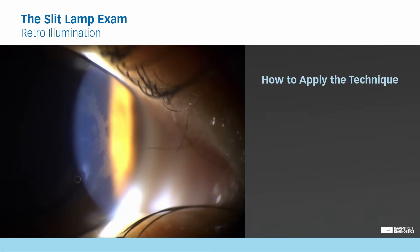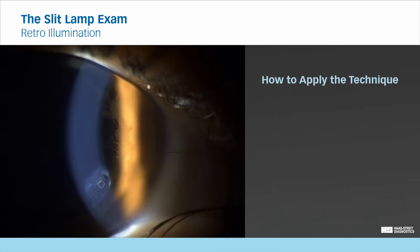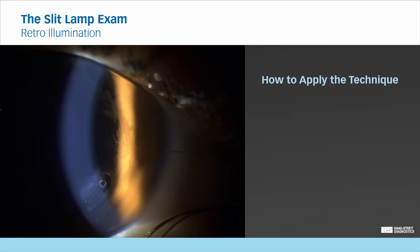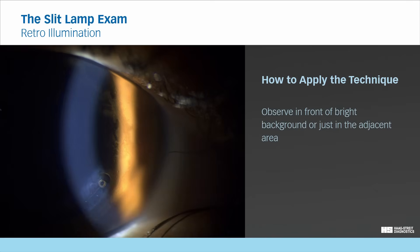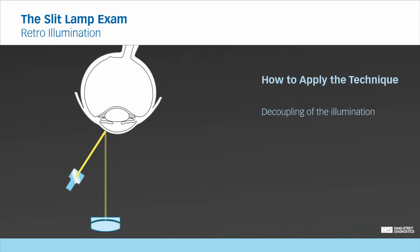To use retroillumination, focus on the area of interest and illuminate the structure behind it. With direct retroillumination, you observe directly in front of the illuminated background. With indirect retroillumination, you look just adjacent to the reflecting area. Depending on the properties of the irregularity, visibility may be enhanced by using either direct or indirect retroillumination. Due to the common pivot of illumination and microscope, the directly illuminated tissue will be in the center of your field of view, while the retroilluminated area is offset.